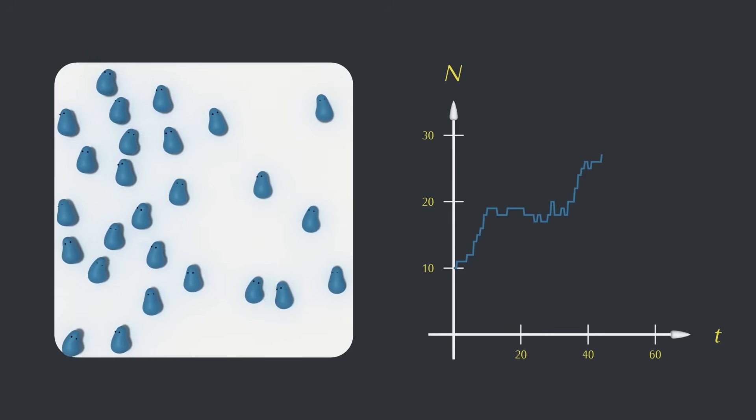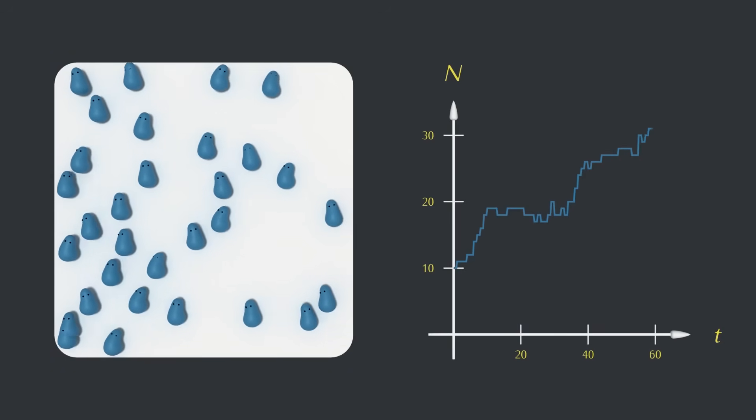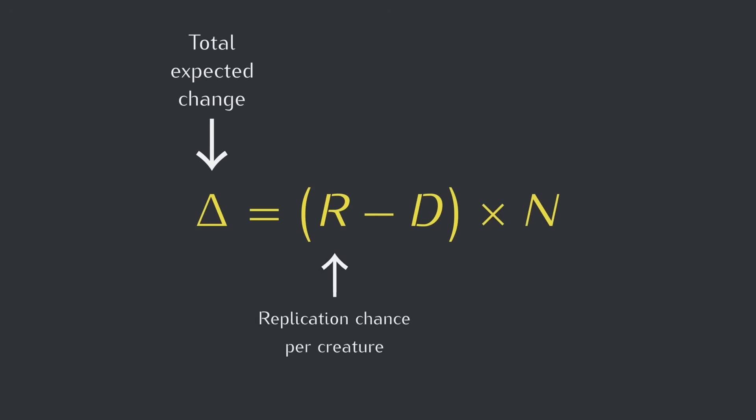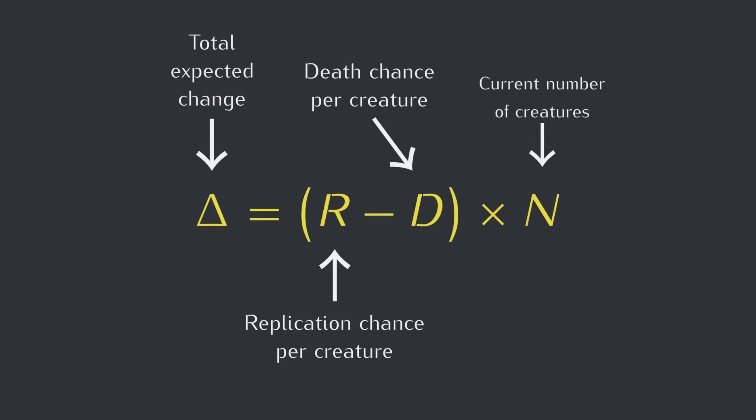As we've built up our model in the last few videos, we've been running simulations where the computer steps through time, and at each time step it decides which creatures live, die, and reproduce according to certain odds. And we built an equation to help us predict what we expect to happen from one instant to the next in a simulation. The expected change in the number of creatures is equal to the creature's replication chance minus its death chance, all times the current number of creatures.